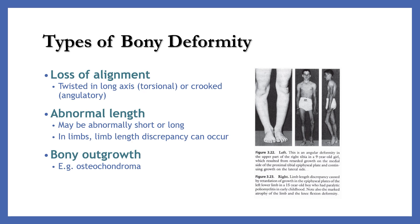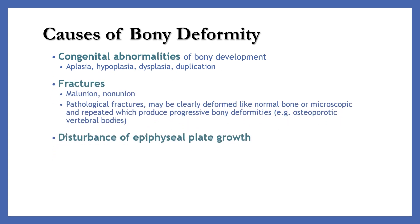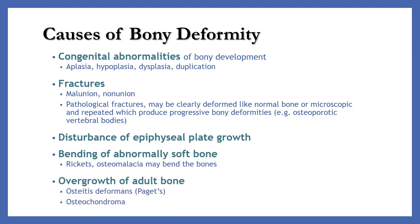The last type is bony outgrowth. Causes of bony deformity include congenital abnormalities, fracture, disturbance of epiphysial plate's growth, bending of abnormally soft bones, or overgrowth of adult bones. In congenital abnormalities of bony development, there are aplasia, hypoplasia, dysplasia, and duplication. For fractures, there are malunion or nonunion. In rickets and osteomalacia, abnormally soft bones may bend. Overgrowth of adult bone occurs in osteitis deformans, Paget's disease, or osteochondroma.